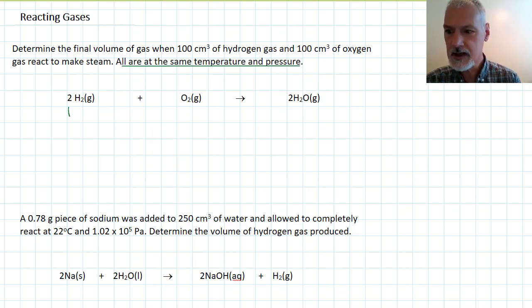So we start off with 100 cubic centimeters of this gas and 100 cubic centimeters of this gas. Now usually we take this information and convert it into moles and then apply the equation, but there's a bit of a shortcut I can use here. Because these are all at the same temperature and pressure, I can imply Avogadro's idea that equal volumes contain equal numbers of particles.